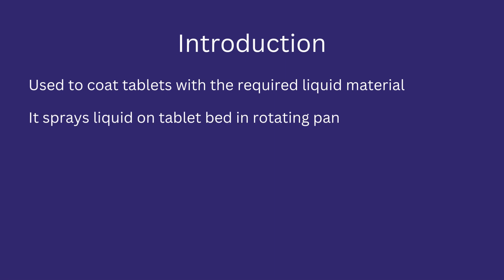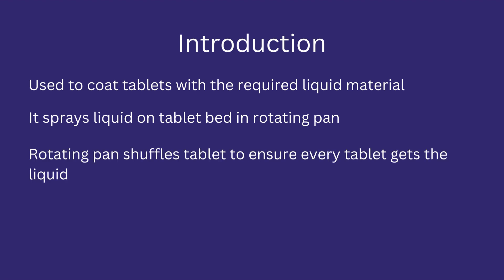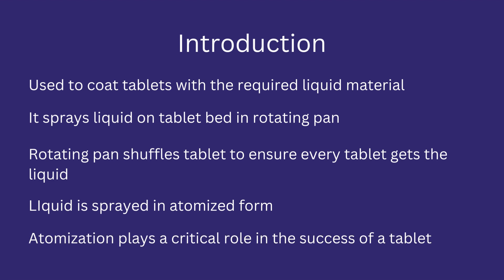It sprays liquid onto the tablet bed in a rotating pan. The pan rotates as part of the process requirement, which tumbles tablets over each other. The tumbling minimizes the exposure of each tablet to the spray liquid and prevents any tablet from missing the coating. The liquid is spread in an atomized form — that is, in droplet shape. Atomization plays a critical role in the success of tablets because drop shape, size, and weight affect the physical appearance and the therapeutic effect of a tablet.